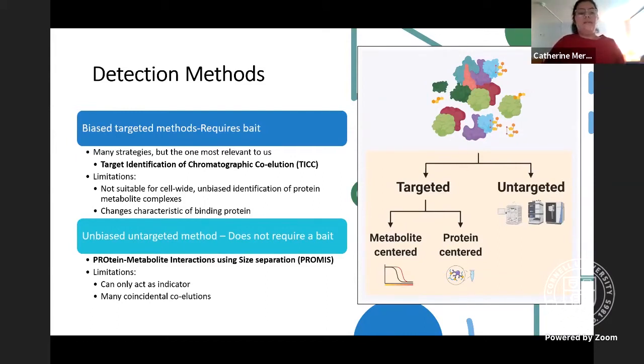To perform interactor-wide studies, untargeted methods are used to characterize many PMIs with a higher yield than targeted methods. One strategy is protein-metabolite interactions using size separation, PROMIS, which does not require a bait protein and does not look for any specific interactions. Yet, the limitation of this approach is that it cannot confirm protein-metabolite interactions, only indicates them for further study. Because metabolites will co-elute with hundreds of proteins, it's likely there will be coincidental co-elutions.